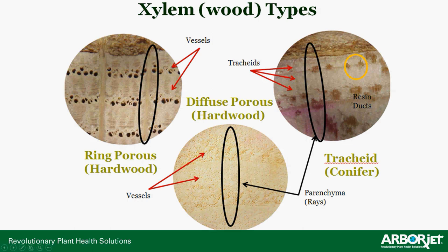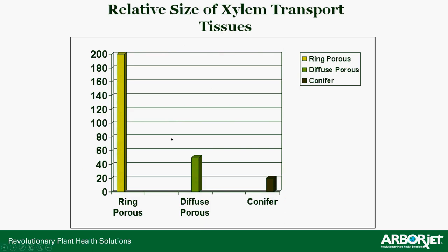In terms of relative size, ring porous vessels are the largest, diffuse porous are about a quarter of that size, and tracheids are about a tenth of the diffuse porous size — so it gets pretty small pretty quickly. The average size is approximately 200 microns for ring porous vessels.